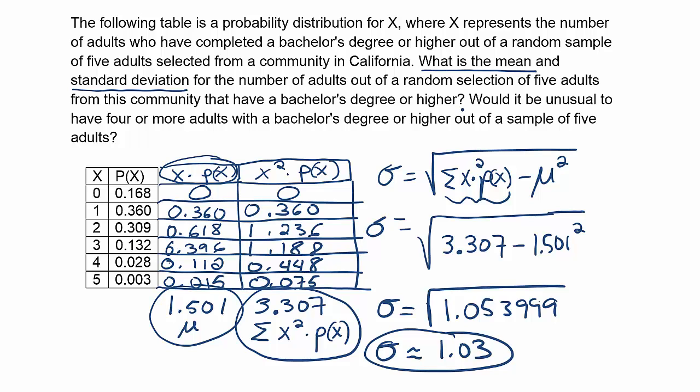For the next question it asks in the problem, would it be unusual to have four or more adults with a bachelor's degree or higher out of a sample of five adults? So let's look at the probability first. Four or more would be these two, right? If you add those together, you get essentially 3.1%, right? So 0.031 as a decimal. 0.031 is 3.1%, and that's less than 5%. That's arguably unusual, right? So less than 5% of the time that would happen. So that's pretty unusual. That's one way to answer the question. Look at the probability and talk about it in that respect.